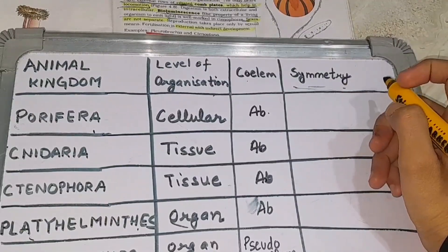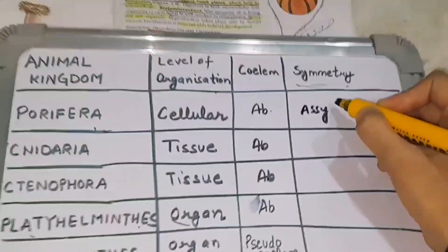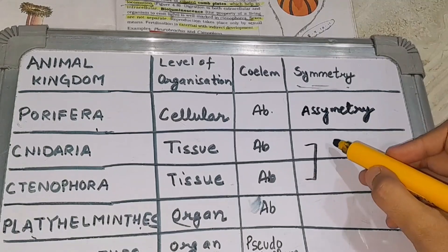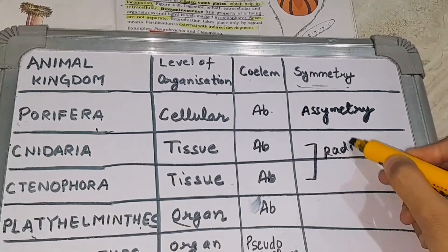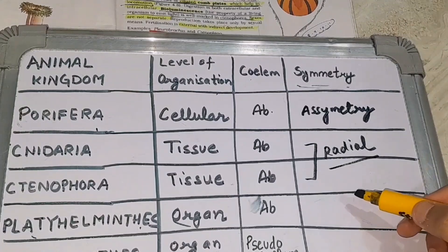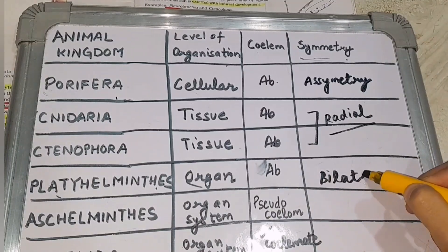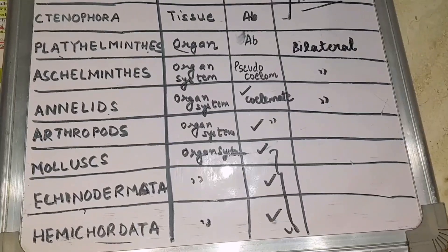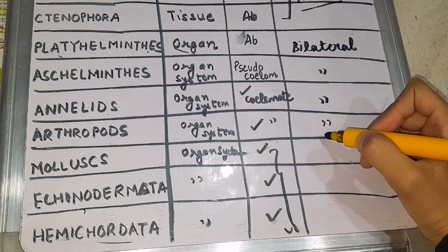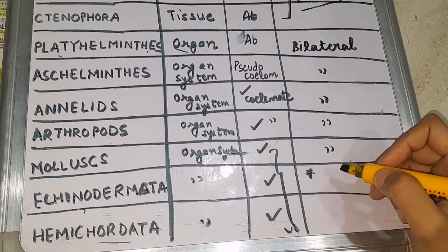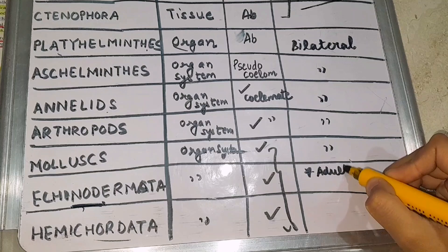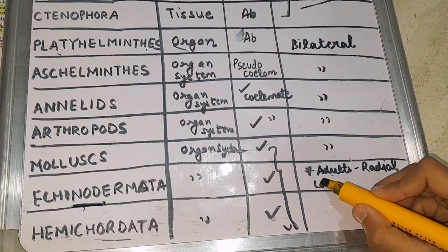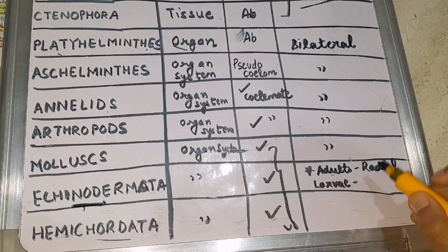Next, differentiation is on the basis of symmetry. In Porifera, there is asymmetry. Then Cnidaria and Ctenophora have radial type of symmetry. Then we come to Platyhelminthes — it is bilateral. Aschelminthes also bilateral, and Annelida, Arthropoda, Mollusca — all these also have bilateral symmetry. Now there is an exception in Echinodermata: in adults there is radial symmetry, and in larva there is bilateral type of symmetry.